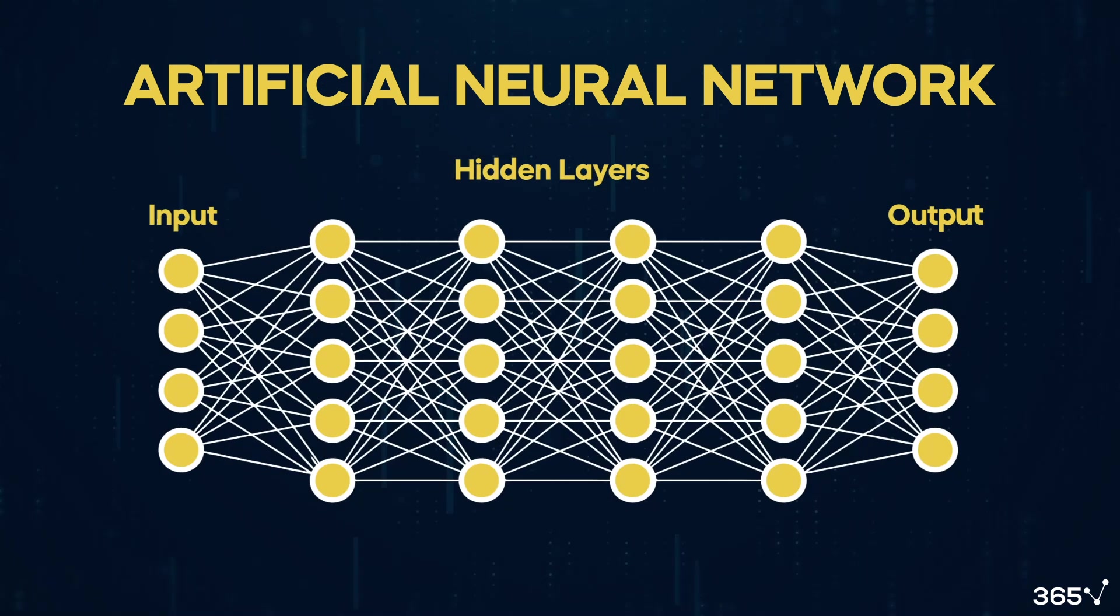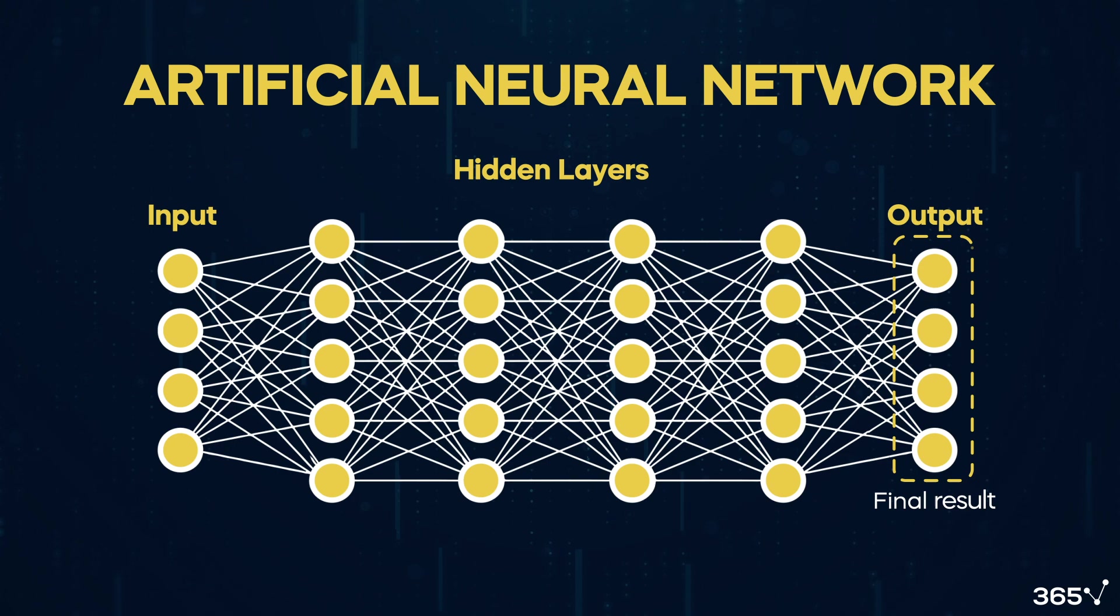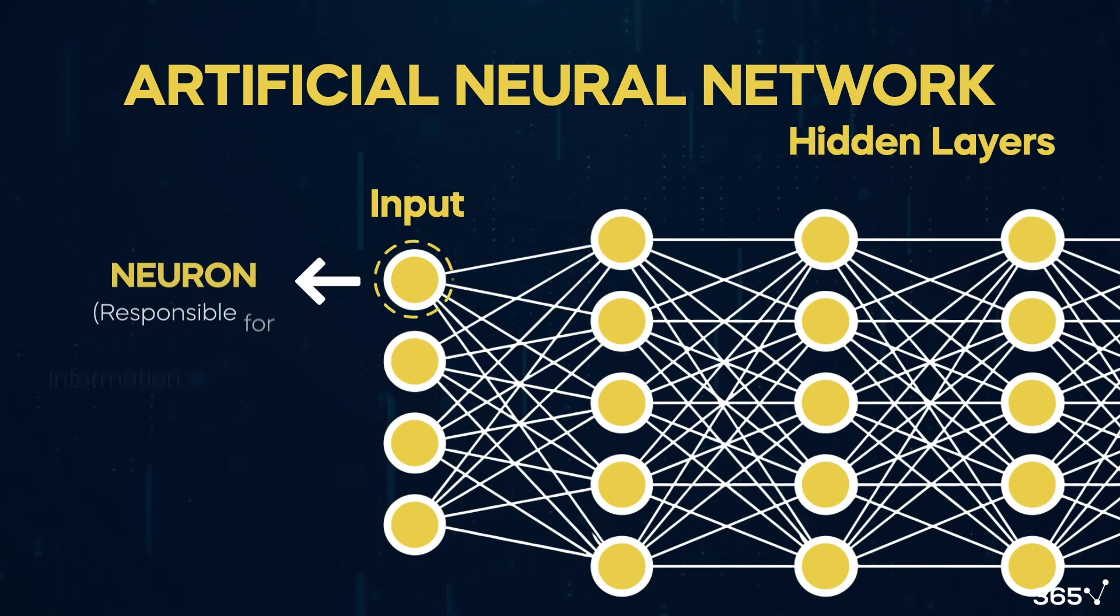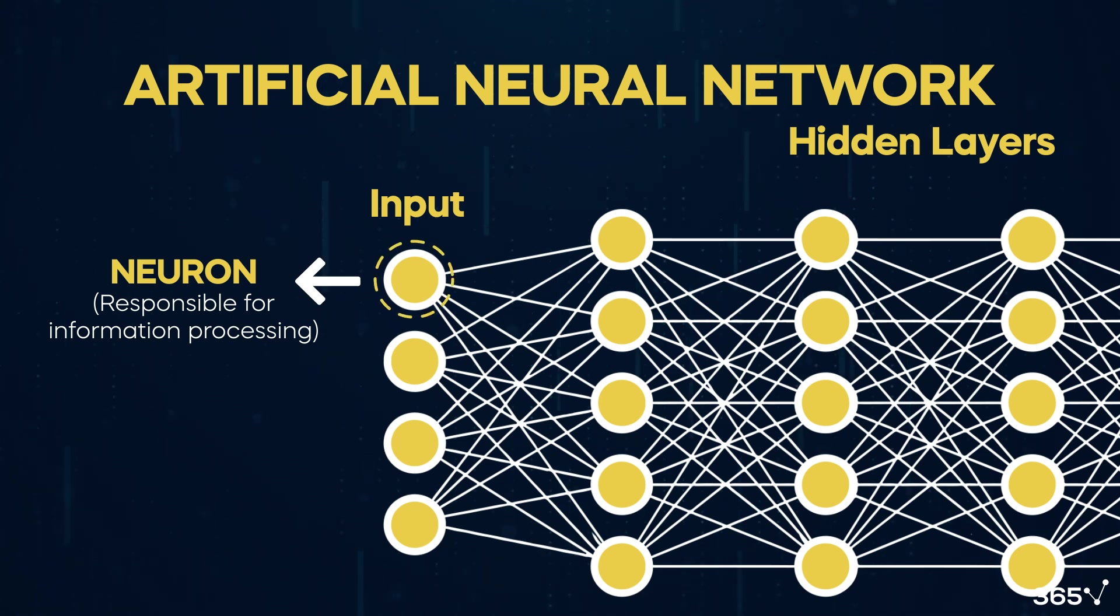We also have an output layer that generates the final result. Every layer of the artificial neural net is made of neurons, or nodes, responsible for processing and transforming the information received.